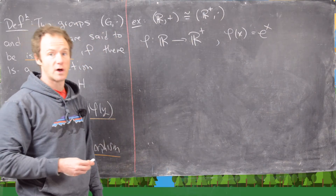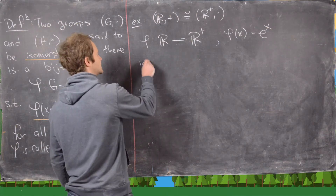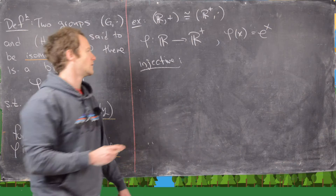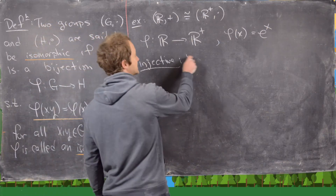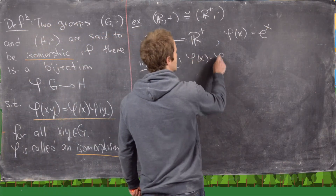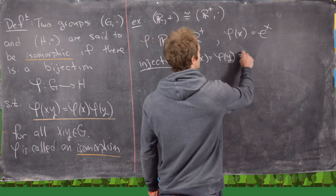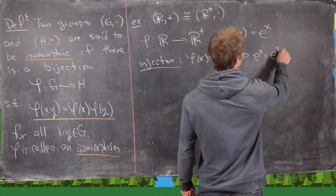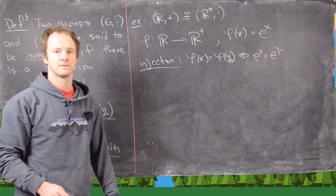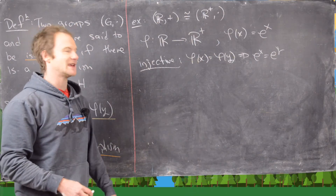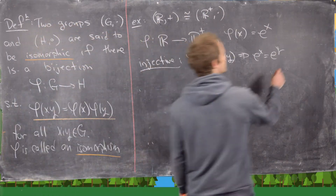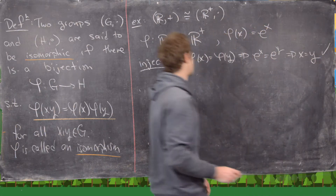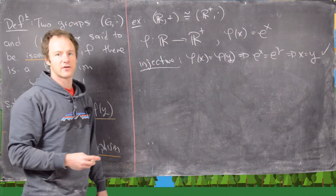Let's check this is injective. Suppose phi(x) = phi(y), meaning eˣ = eʸ. Taking the natural log of both sides gives x = y, so yes, this function is injective — one-to-one.